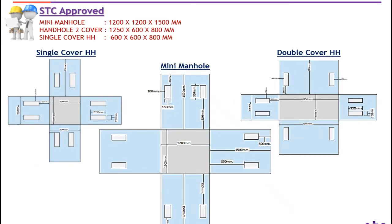In this slide we can see a number of handholes and mini manholes cross sections — a top view with extended cross section of single cover handhole, double cover handhole and mini manhole. Single cover handhole: the shape looks like a square — 600 mm width and 600 mm length. So it is a 60 cm by 60 cm handhole — a small or pulling handhole.